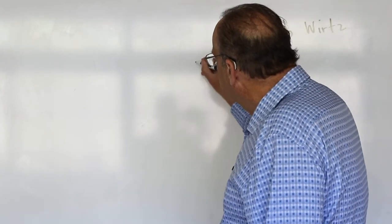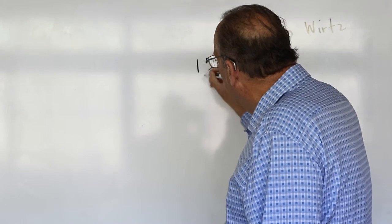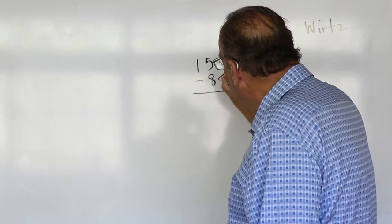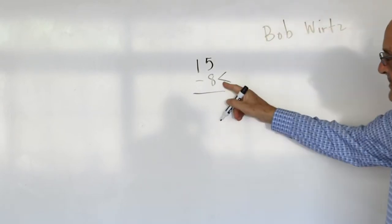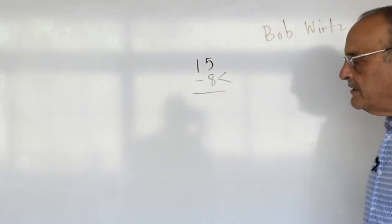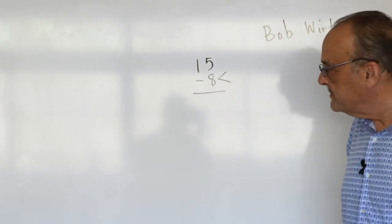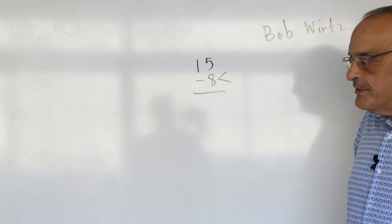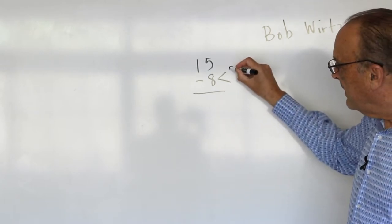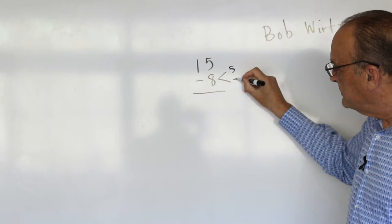So for example, if you're going to do 15 minus 8, I'm not sure he used the sideways V, but I do. But basically he said you should say a sentence and let 10 be a resting point. So 15 minus 5 is 10 and 10 minus 3 is 7.